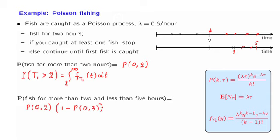Notice that I'm multiplying those two probabilities. Why? In a Poisson process, whatever happens in disjoint time intervals are independent events. So the event that no fish were caught in [0, 2] and the event that at least one arrival occurred in [2, 5] are independent, which is why we can multiply their probabilities.